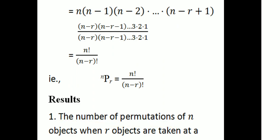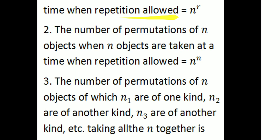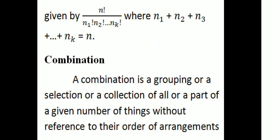First, the number of permutations of n objects where r objects are taken at a time when repetition is allowed equals n raised to r. When all n objects are taken at a time with repetition allowed, it equals n raised to n. The number of permutations of n objects where n1 are of one kind, n2 are of another kind, n3 of another kind, taking all n together, is given by n factorial divided by n1 factorial into n2 factorial into ... into nk factorial, where n1 plus n2 plus ... plus nk equals n.